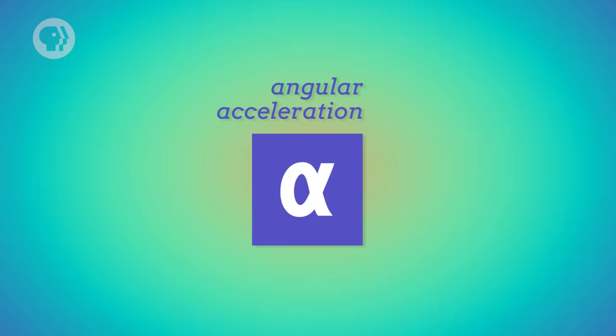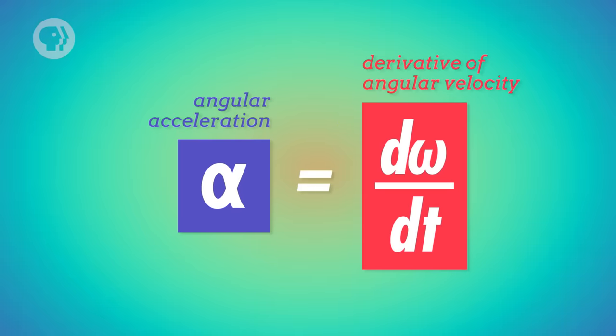Okay, I know I just blew your mind, so while you put your head back together, I want to talk about one more basic quality of rotational motion – angular acceleration. Based on what you already know about acceleration, you can already guess that angular acceleration is the derivative of angular velocity. It's represented by the lowercase Greek letter alpha, and it describes how an object's angular velocity is changing over time.